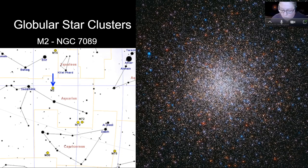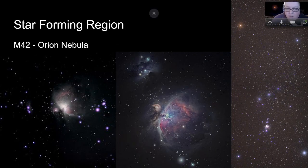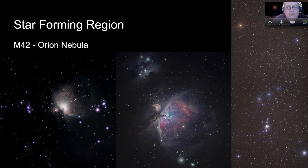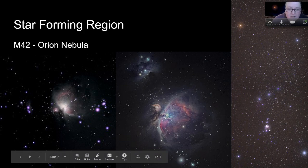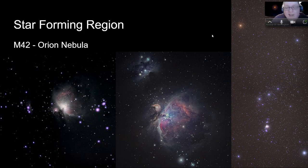Another type of object in the Messier catalog is a nebula — really just a gas cloud, but coming in a few different types. One of my personal favorites is a star-forming region, called that because it's a giant cloud of gas where stars are being born — a stellar nursery. The most famous is M42, the Orion Nebula, named because it's in the constellation Orion, right in the sword hanging off his belt. You may see what looks like a star in the middle of his sword — that's actually the Orion Nebula. It can be seen with the naked eye with decently dark skies, and it's gorgeous through a telescope.